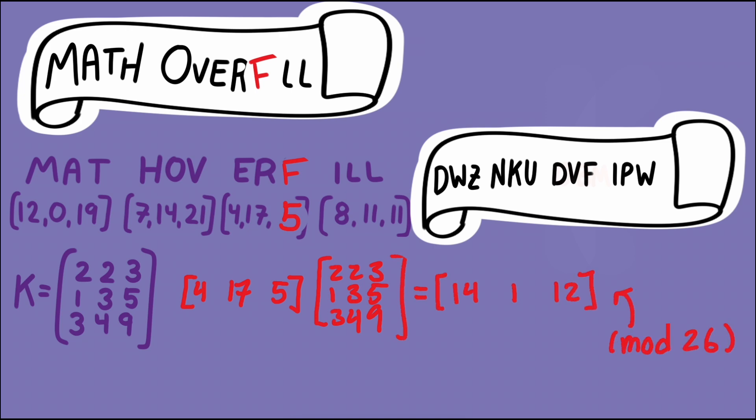For example if our plain text had been math over fill, just one letter different, then the block that now contained erf would encrypt to obm. Making the ciphertext dwz nku obm ipw. So changing one character in our plain text resulted in a change of three characters in our ciphertext. That is diffusion.